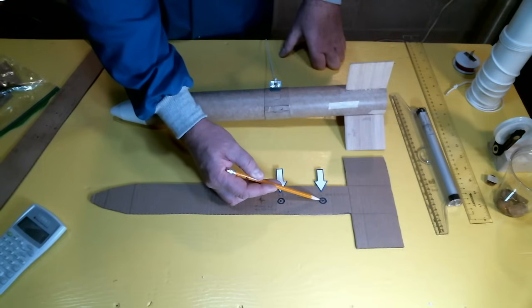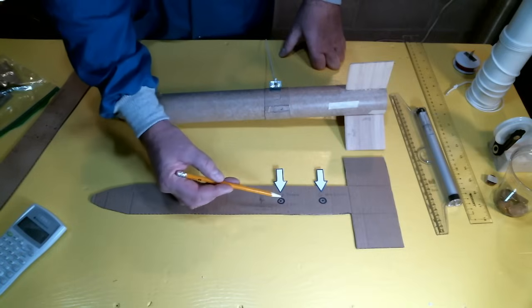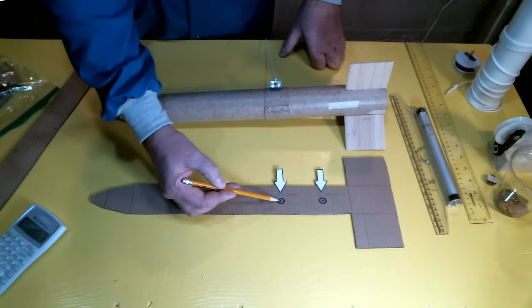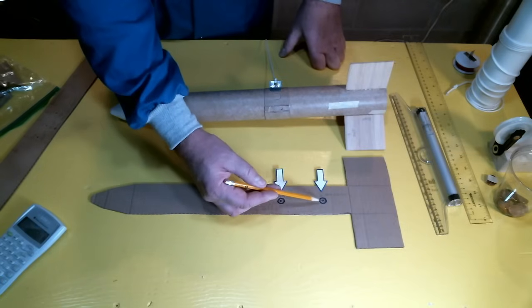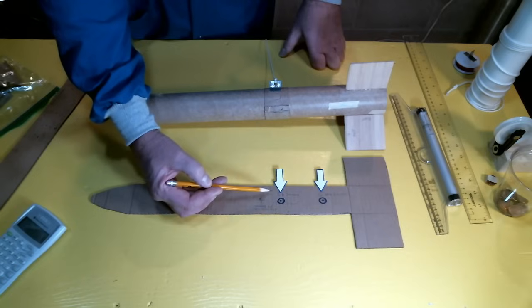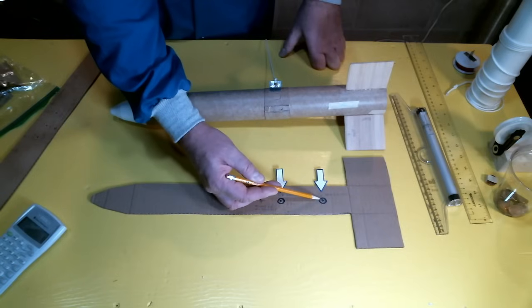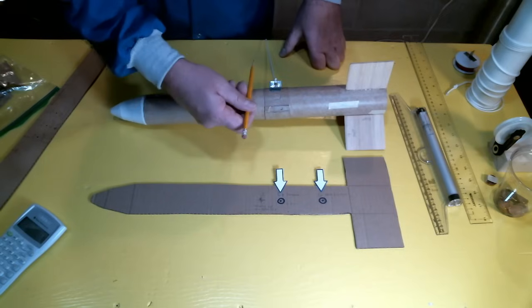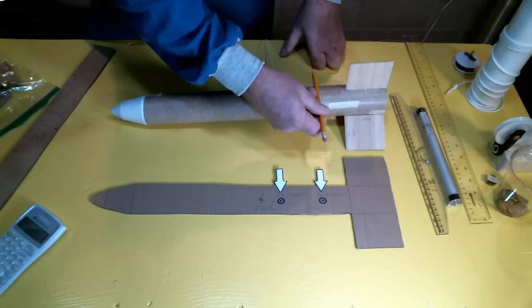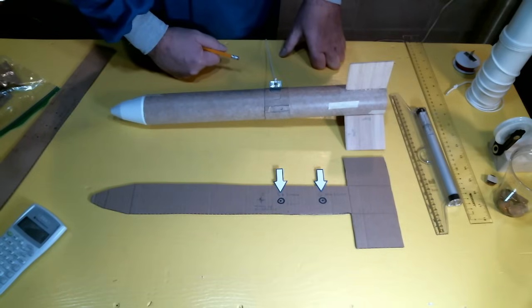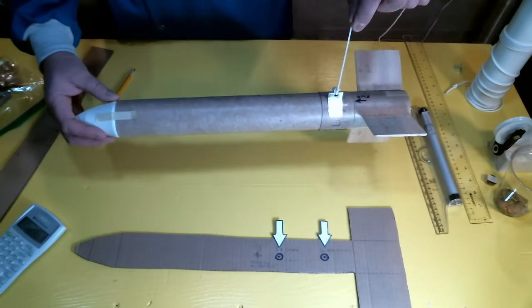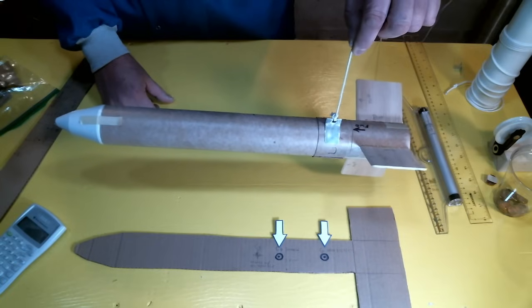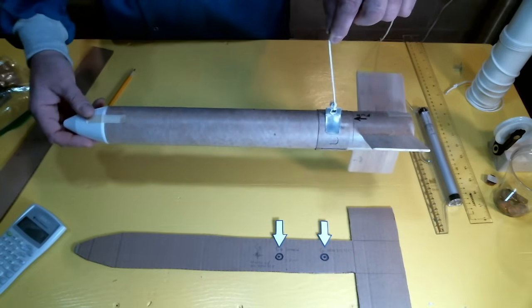This is the center of pressure location calculated by the OpenRocket software. And this is the center of pressure location determined by the shadow method. You'll see there's a pretty big discrepancy between these two points, up to about 2 inches. So what I want to do now is to transfer the center of pressure location from OpenRocket to my model rocket, and then balance the rocket so I can move my collar to that center of pressure point, and do another spin test to see what happens. This is the rebalanced configuration to test out the center of pressure location generated by the OpenRocket software. Let's go ahead and go outside and give it a spin test.